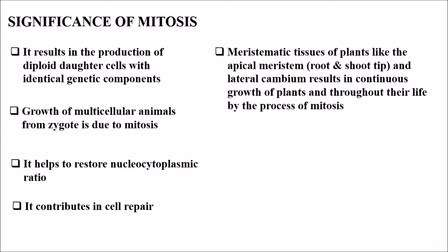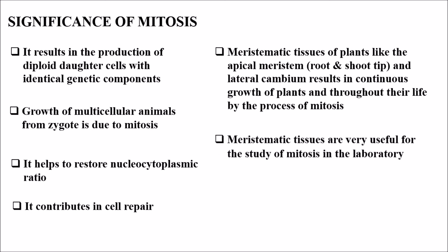Meristematic tissues of plants, like the apical meristem and lateral cambium, result in continuous growth of plants throughout their life by the process of mitosis. These meristematic tissues are present in the root tip and shoot tip and continuously grow because of mitosis.